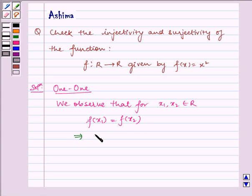which implies x₁² = x₂², which implies x₁ = ±x₂. But x₁ ≠ -x₂.